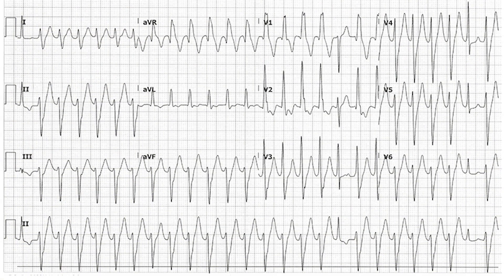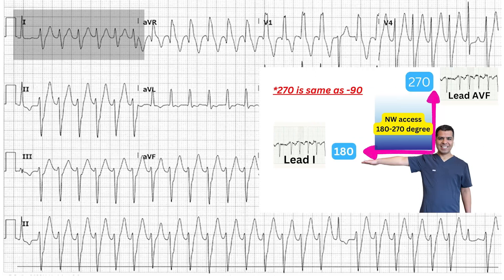Let's take a look at this EKG. The QRS net deflection in lead 1 is negative, going in the direction of my stretched right arm at 180 degrees. Lead AVF net QRS deflection is also negative, going upward through my head at minus 90 degrees, or 270 degrees — they are the same. So the axis is between 180 and 270 degrees, and this is what we call a southwest axis.